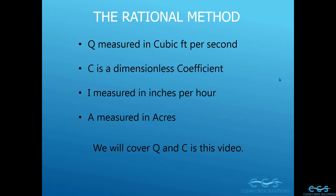Q is measured in cubic feet per second. C is a dimensionless coefficient, and we're going to get into what makes up that coefficient. I is measured in inches per hour of rainfall intensity. A is generally measured in acres in English units — you could use square feet, but when talking about rainfall runoff with the rational method we are usually talking about acres. In this video we'll cover what makes up Q and C of that equation.